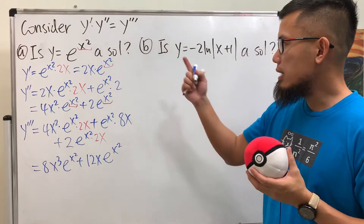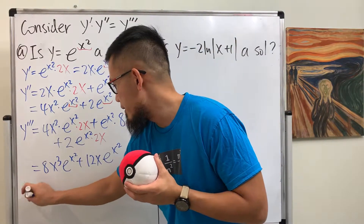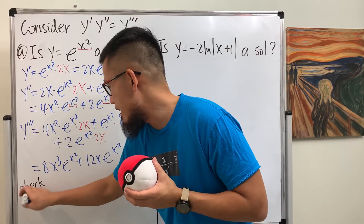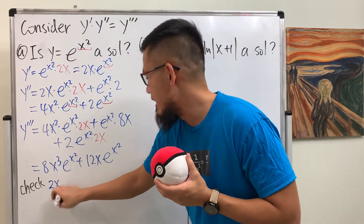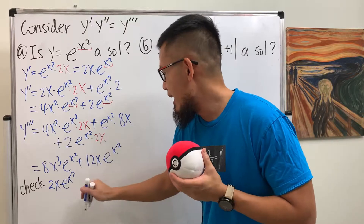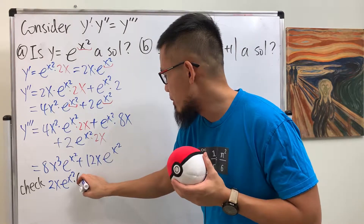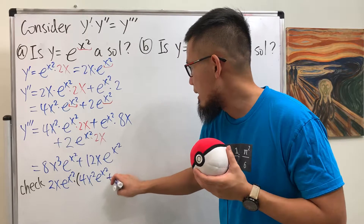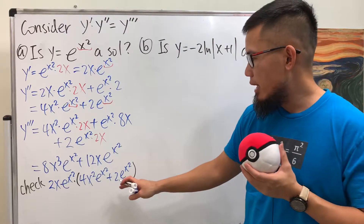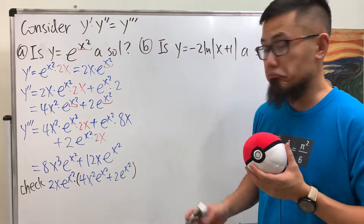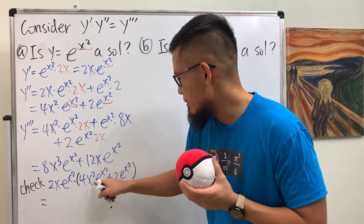Now let's check: on the left-hand side we multiply the first derivative by the second derivative. That's 2x · e to the x squared multiplied by (4x squared · e to the x squared plus 2 · e to the x squared). Let's multiply this out and see if it equals y triple prime.